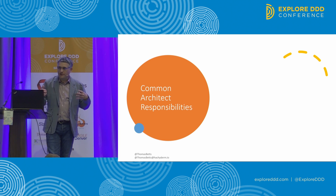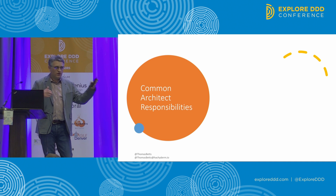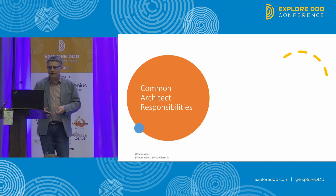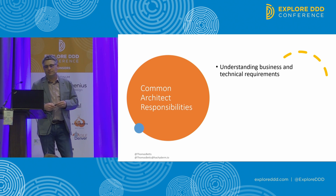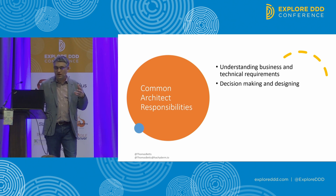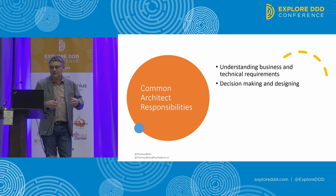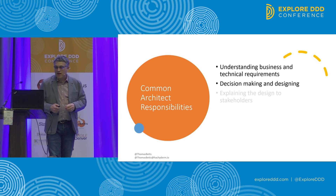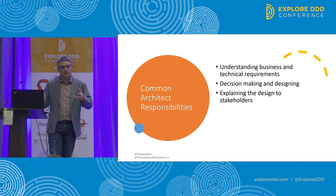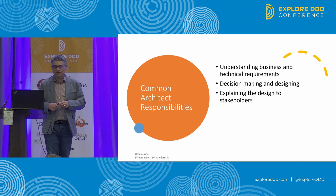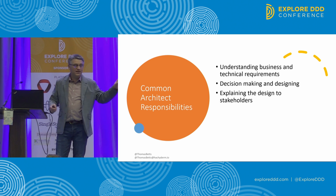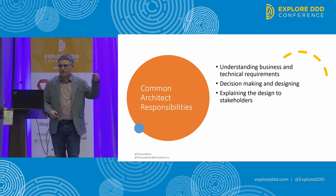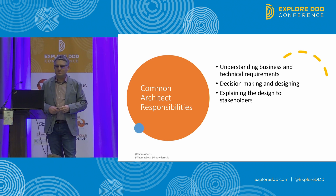The work that an architect does will vary a lot from company to company, and even within a company you'll see different things. But there are some things you always have to do: understanding business and technical requirements, making technical decisions, designing software systems, and explaining those design decisions to stakeholders. Explore DDD is a great conference because one of those bullet points will be the subject of pretty much every talk here.